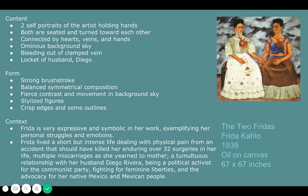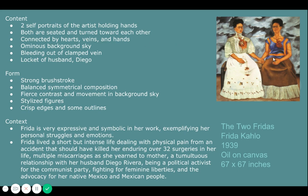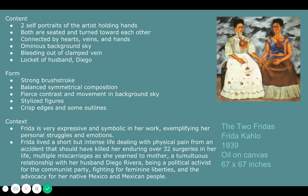The sky is very ominous and eerie. There is bleeding happening from a clamped vein on the white dress. On the other Frida — the one on the right — in her hand is a locket with a picture of her husband, technically at that time her ex-husband, Diego — specifically Diego Rivera, who we will be learning about when we study the Mexican Muralists.